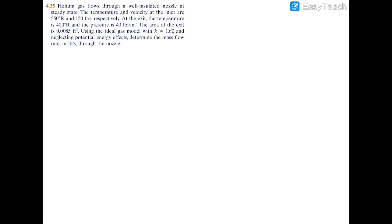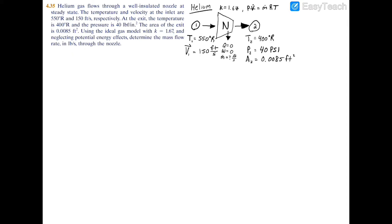In this example we have helium gas flowing through a well-insulated nozzle at steady state. We have the temperature and velocity at the inlet, and at the exit we have the temperature and the pressure. We're also given the area at the exit, the ideal gas model, the k value, and we need to find the mass flow rate of the nozzle.